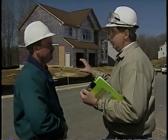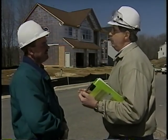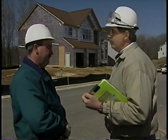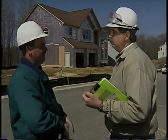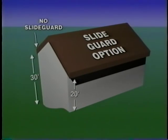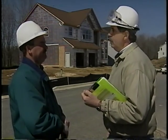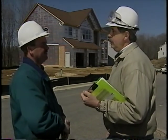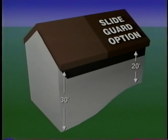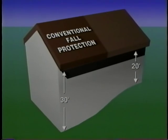What about houses that have different elevations from the front and the back? Houses built on sloping ground — if the eave height in the front is 20 feet and the eave height in the back is 30 feet — the slide guard option would only apply to the front, not to the back. The same principle applies when the slope of the ground parallels the eave: where the fall distance is 25 feet or less, the slide guard option can be used; anything greater than 25 feet, the slide guard option does not apply.